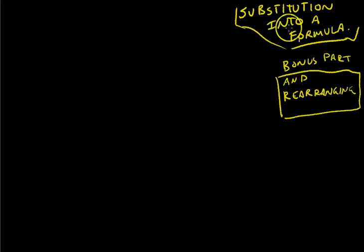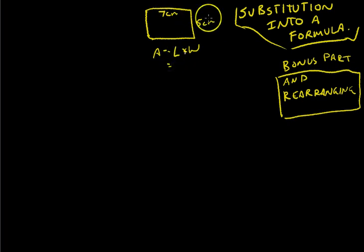You've been doing substitution into a formula for a long time. For example, in primary school you probably learned that the area of a rectangle is equal to length times width. You might have seen a rectangle that was 5 centimeters by 7 centimeters, so you substituted those values into the formula. The length is 7, the width is 5, and you found that the area was 35 centimeters squared.